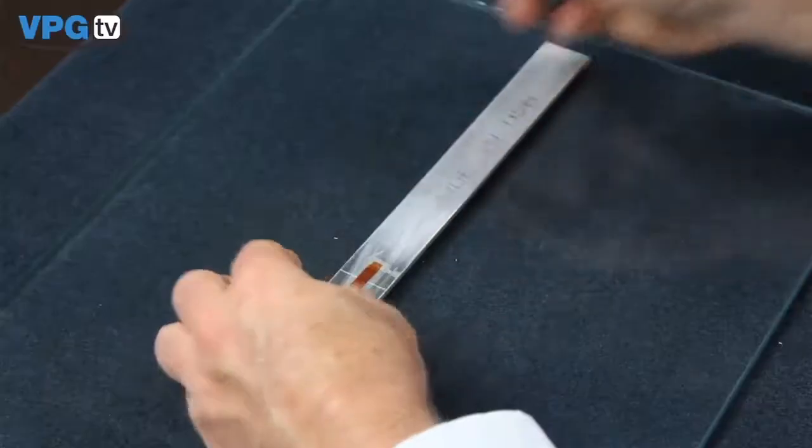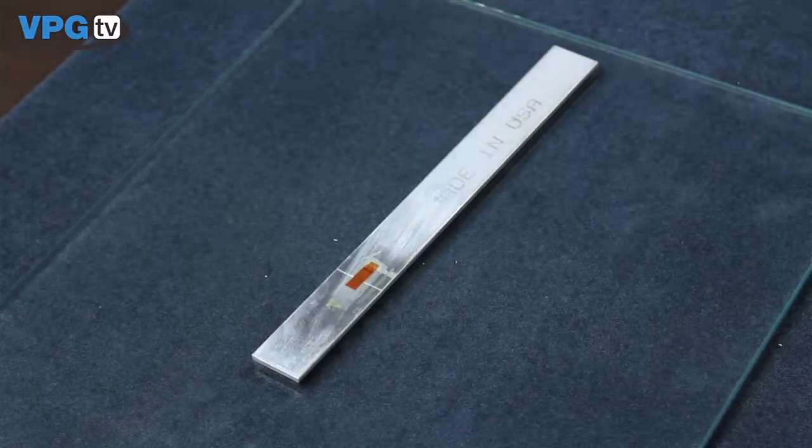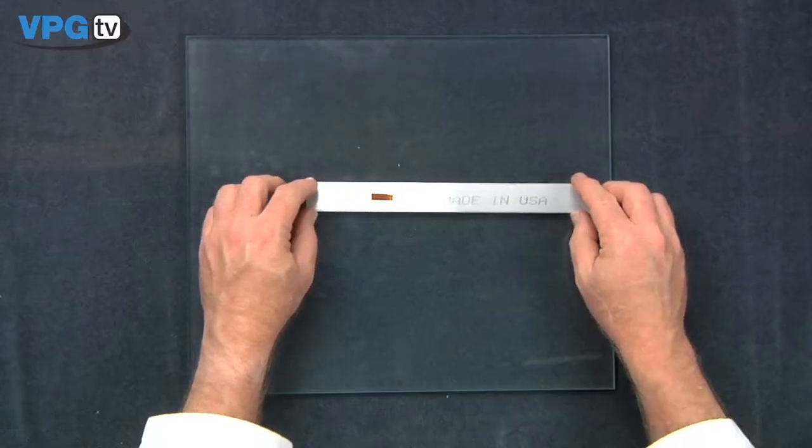If a post cure is required, place the unclamped part in the oven for two hours at 50 to 75 degrees Fahrenheit above the max operating or cure temperature, whichever is greater.